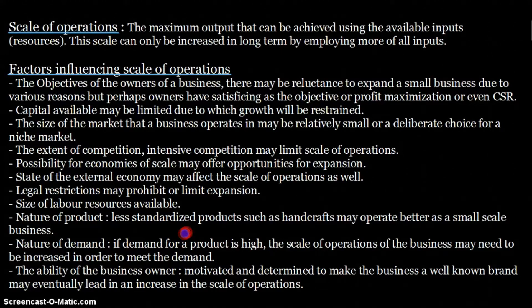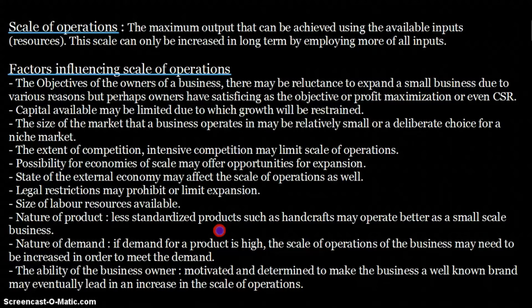The nature of the product matters as well. A less standardized product, such as handcrafts or customized items, will probably operate better at a small scale because only a limited number of people will buy it. In contrast, a standardized product — like soft drinks or toilet tissues — is bought by the general population, making it suitable for a larger scale of operations.